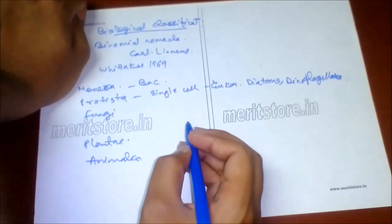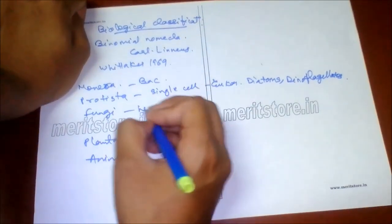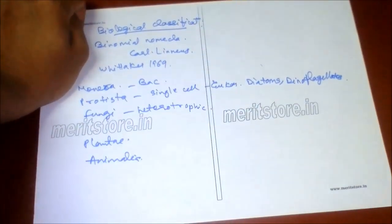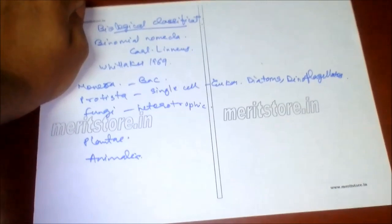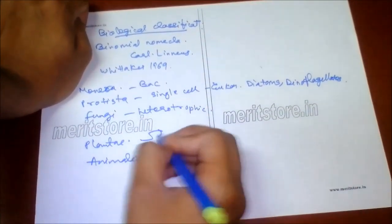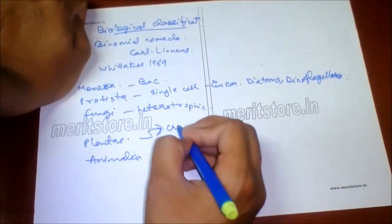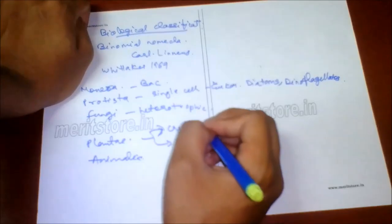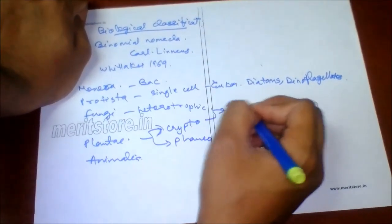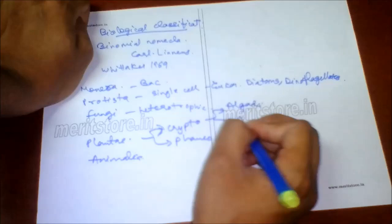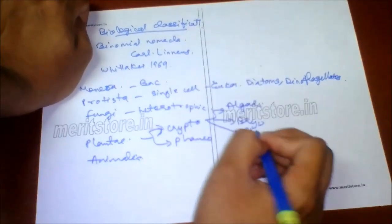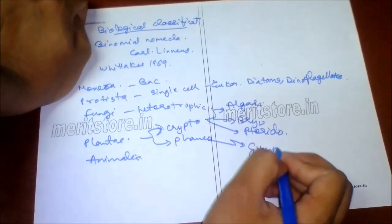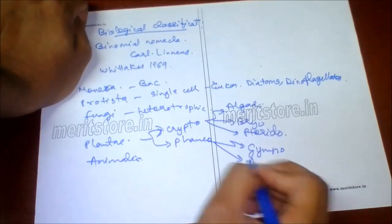Kingdom Fungi are heterotrophs and non-photosynthetic. Kingdom Plantae includes cryptogamae (algae, bryophyta, pteridophyta) and phanerogamae (gymnosperms and angiosperms).